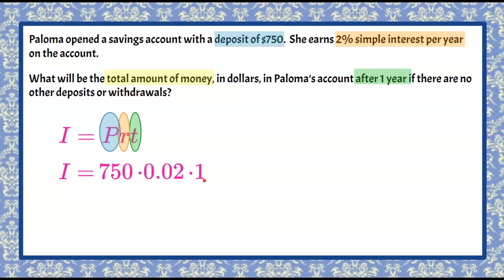You can use your calculator on this type of question. Since multiplying by one gives itself, we type 750 multiplied by 0.02 into our calculator, which gives us an interest of $15. But this is not your final answer — this is just the amount of interest Paloma earned after a year of letting the bank hold her money.